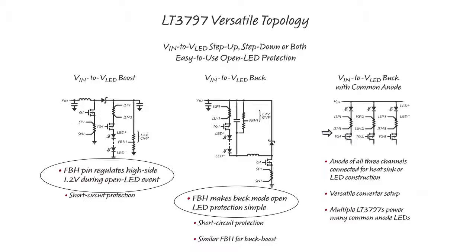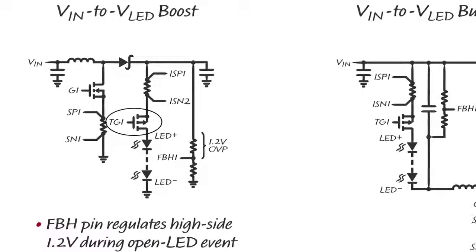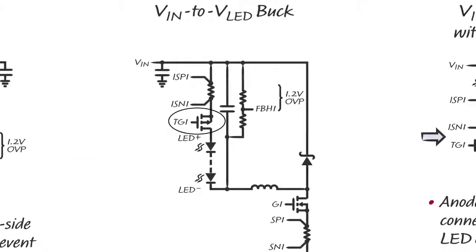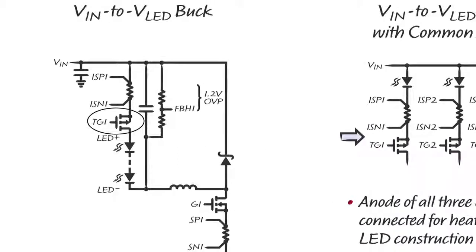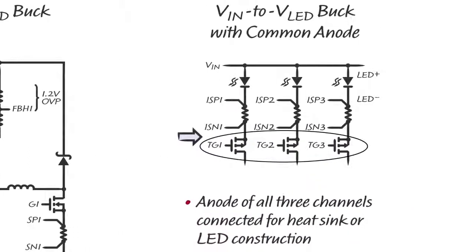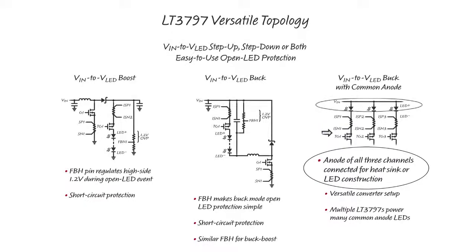Level-shifting transistors are not needed in buck or buck-boost-mode topologies. The high-side TG1 PWM MOSFET driver provides simple and flexible PWM dimming in all topologies as well as LED-to-ground short-circuit disconnect. The versatility of the 3797 even allows the LED anodes to be connected together for common anode applications such as triple buck-mode.